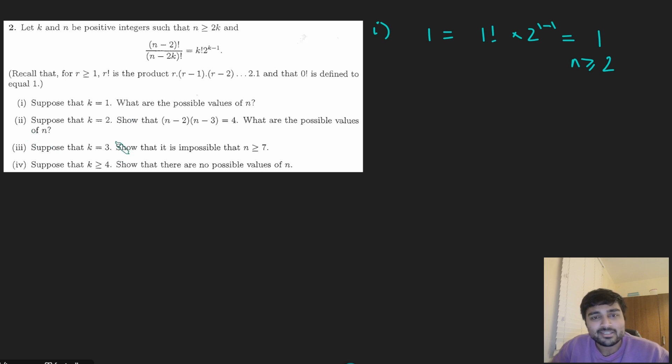Part 2. Suppose now that k is 2, show that (n - 2)(n - 3) is 4. Well, let's just sub it in and see what we get. (n - 2)! over (n - 4)! That will be equal to 2! times 2 to the 2 minus 1.